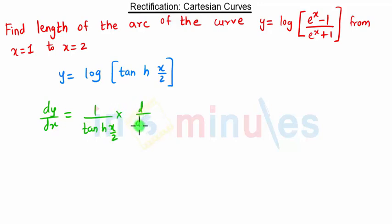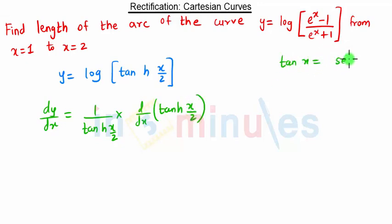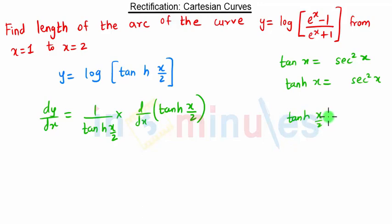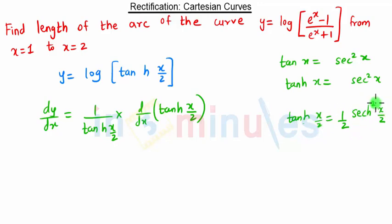— into the derivative of tanh(x/2). The derivative of tan x is sec²x. Similarly, the derivative of tanh x is sech²x. So the derivative of tanh(x/2) will be sech²(x/2) multiplied by the coefficient 1/2. Therefore, the derivative of tanh(x/2) is (1/2)sech²(x/2).